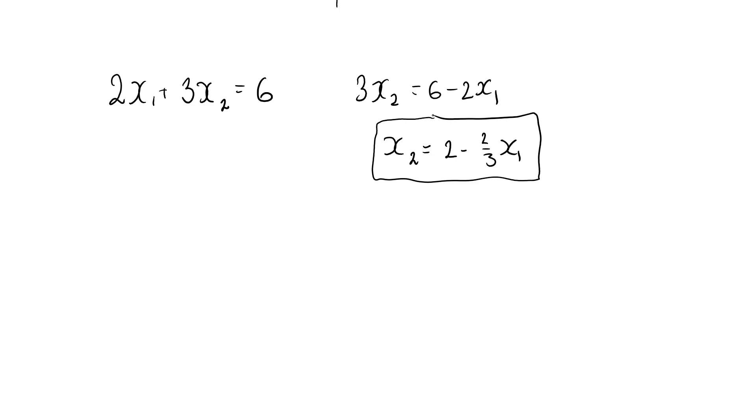So why is this important? Well, if I want to make a graph of the budget line, then it's way easier to do that once you have an explicit relationship compared to having an implicit one. Here, for example, I can see that x2 is a linear function of x1, so I can draw this very simply.